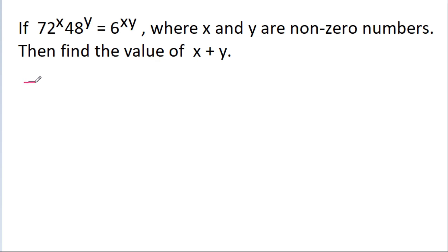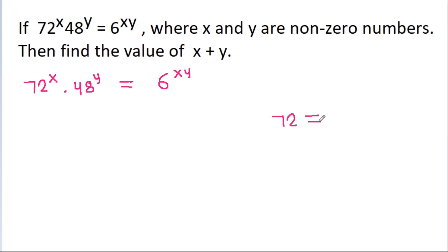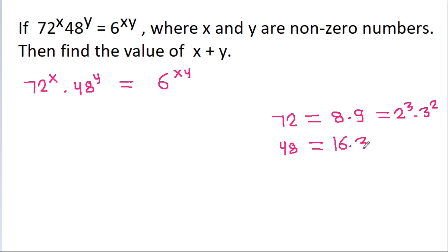We have given that 72 power x into 48 power y is equal to 6 power xy. If we try to convert every number into powers of 2 and 3, then 72 can be written as 8 times 9, where 8 is 2³ and 9 is 3². And 48 is equal to 16 times 3, where 16 is 2 power 4. And 6 can be written as 2 times 3.